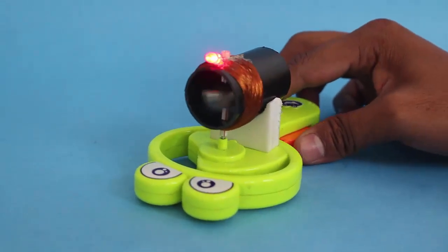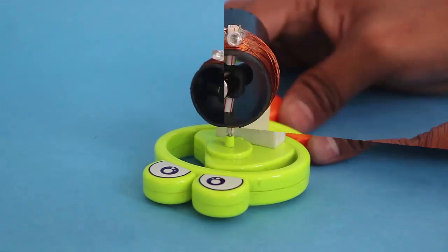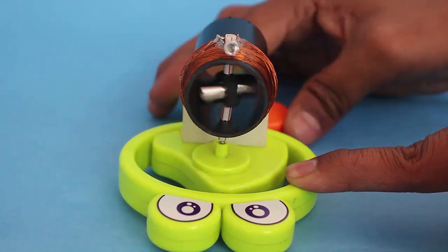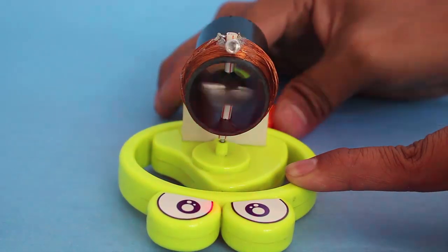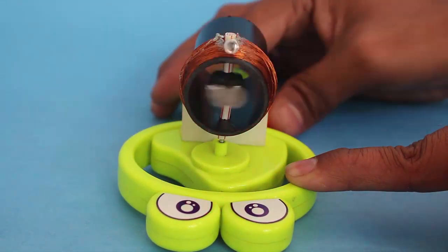Now on pressing the lever, the magnets inside the coil will spin and generate a current which will light the LED.